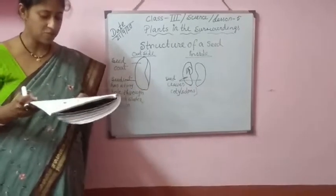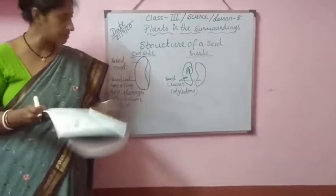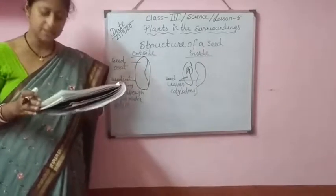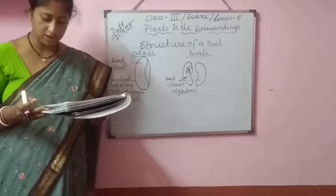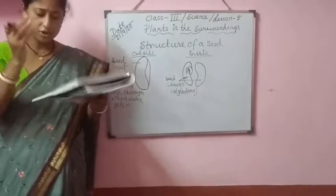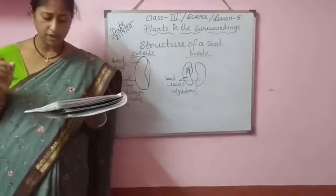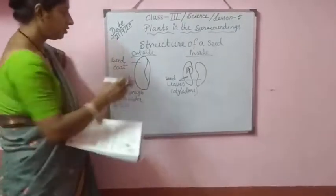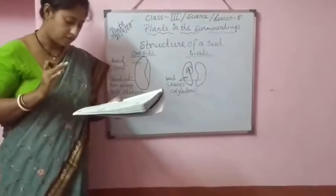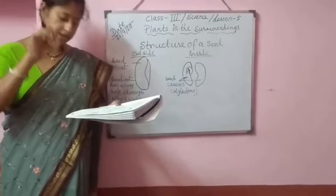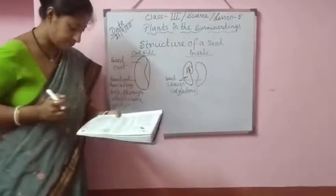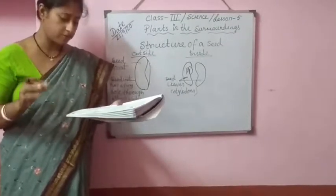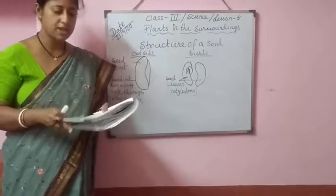Next, the embryo means the baby plant. The embryo is the baby plant inside the seed. As the seed matures with the help of sunlight, air, food, and water, the baby plant grows into a seedling.